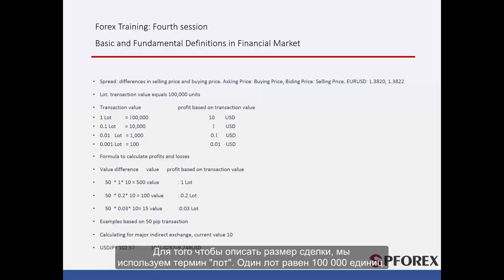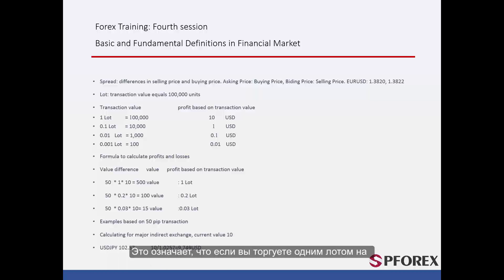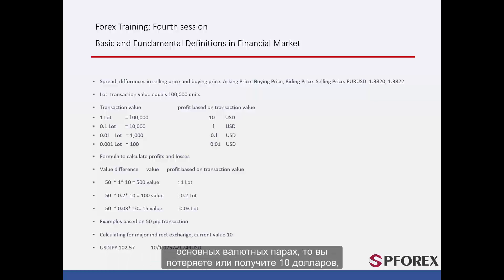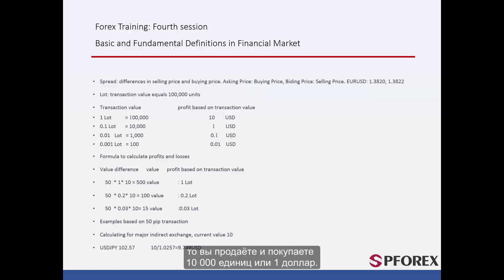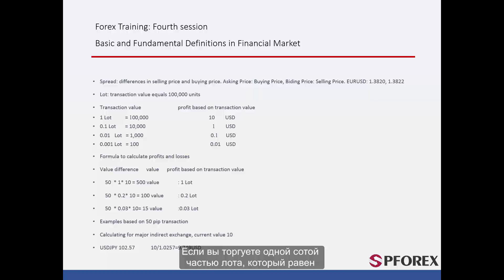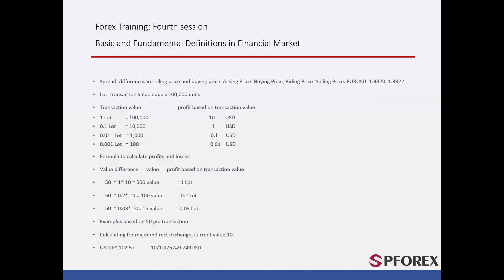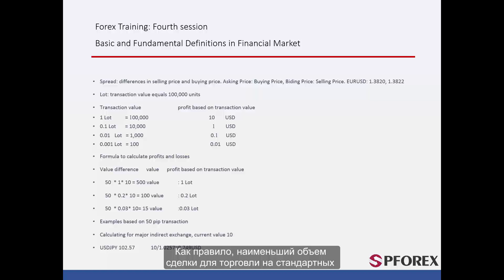In order to describe the size of transactions, we use the term LOT. One lot is equal to 100,000 units. If you are trading 1 lot using major currencies, you will lose or gain $10. When you deal 1 tenth of a lot, you are dealing 10,000 units or $1. If you are dealing with 1 hundredth of a lot, equal to 1,000 units, you will lose or gain 1 tenth of a dollar. Usually the lowest amount traded in standard accounts is 0.1, in micro accounts it is 0.01, and in nano accounts it is 0.001.